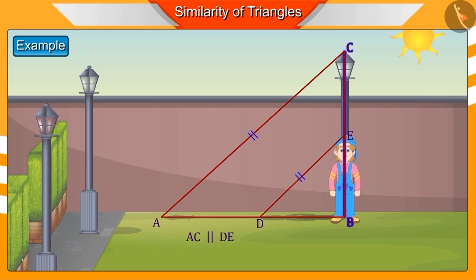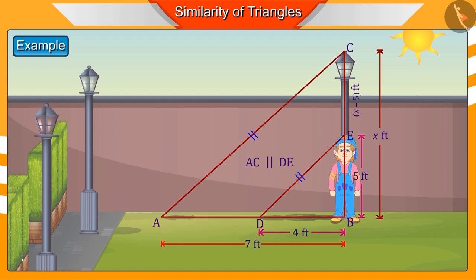We assume that the height of the pole to be X, which we have to find out. BE is the height of Nakul, BC is the height of the pole, DB is the shadow of Nakul, and AB is the shadow of the pole.